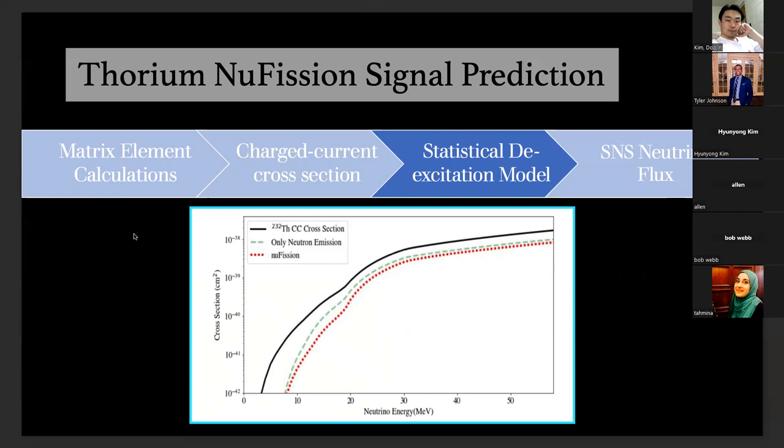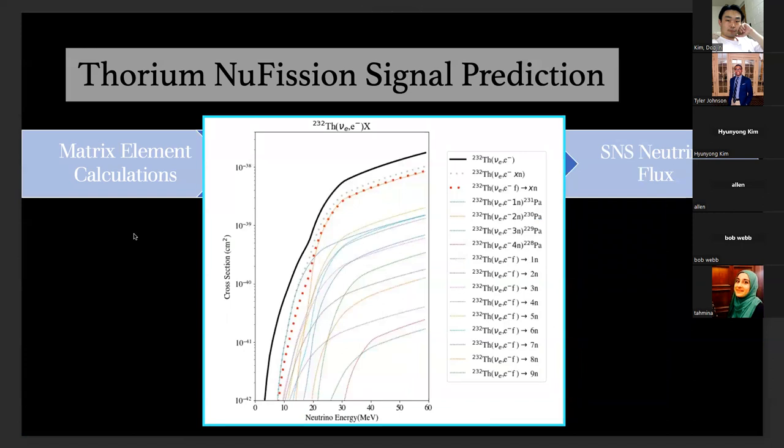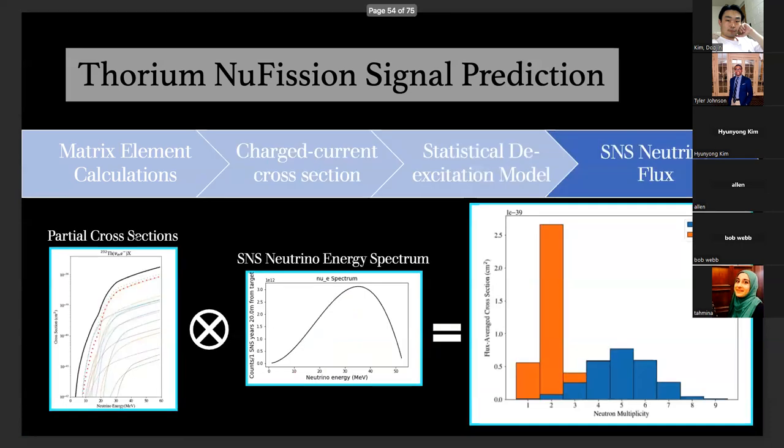What he provided us was this beta strength function, which tells you the probability of going between an initial state in the thorium and the final state in the protactinium via this neutrino capture. You can convolve this information with certain facets about the thorium nucleus as well as the weak interaction. You end up with this cross section as a function of the neutrino energy. You can go even further and ask what is the excitation energy of these neutrino interactions and what angular momentum do they get. You can turn to a statistical decay code called ABLA or ablation. It'll tell you what the branching ratios are for these certain configurations. You can break these down into partial cross sections for new fission, for instance, which is this red dotted line. You can also ask what is the probability of emitting one neutron, two neutrons, all throughout however many neutrons you want. When you convolve this with the neutrino spectrum of the SNS, specifically the electron neutrino spectrum, you can end up with this flux average cross section as a function of neutron multiplicity.